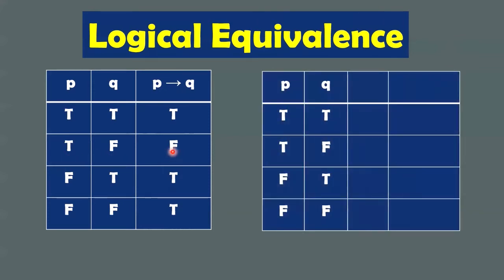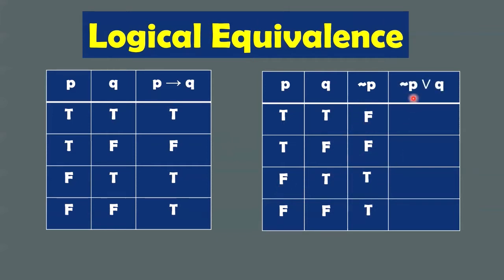Let's create another table. Can you give me the truth values of not P? It's easy — all we have to do is negate these values. The negation of a true statement is false. The negation of a false statement is true. That's why we have these values. Next, we get the truth values of not P or Q.